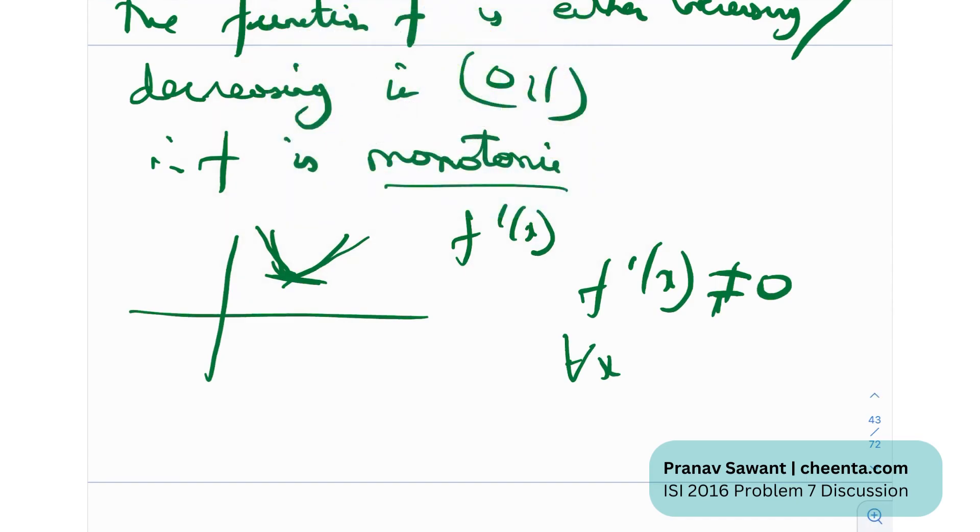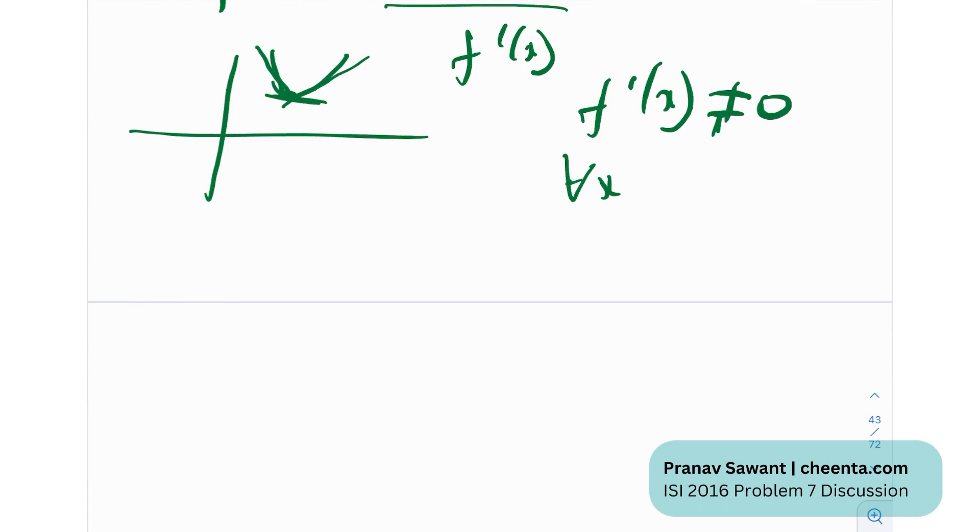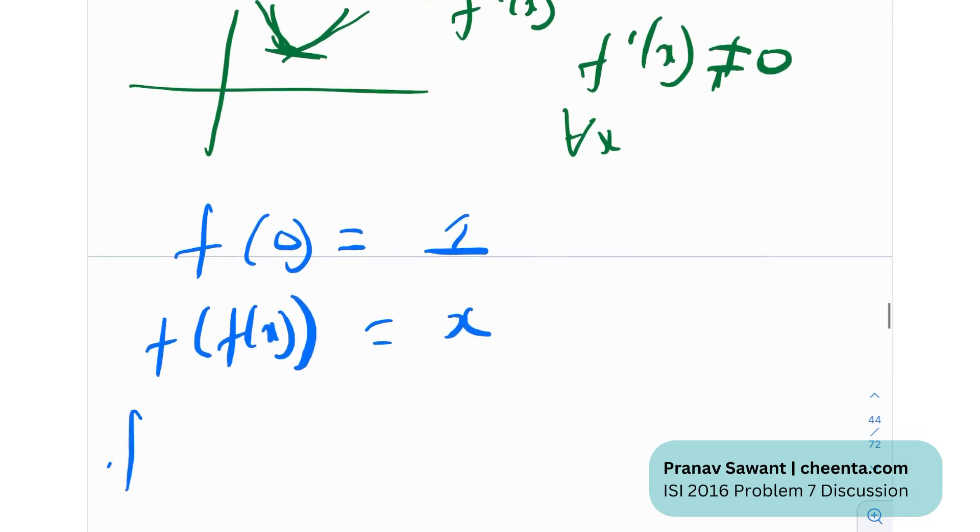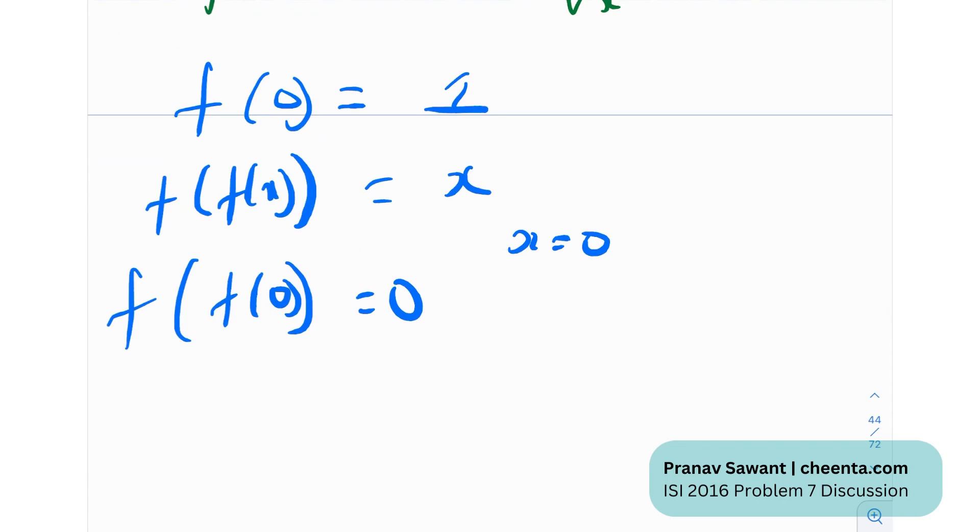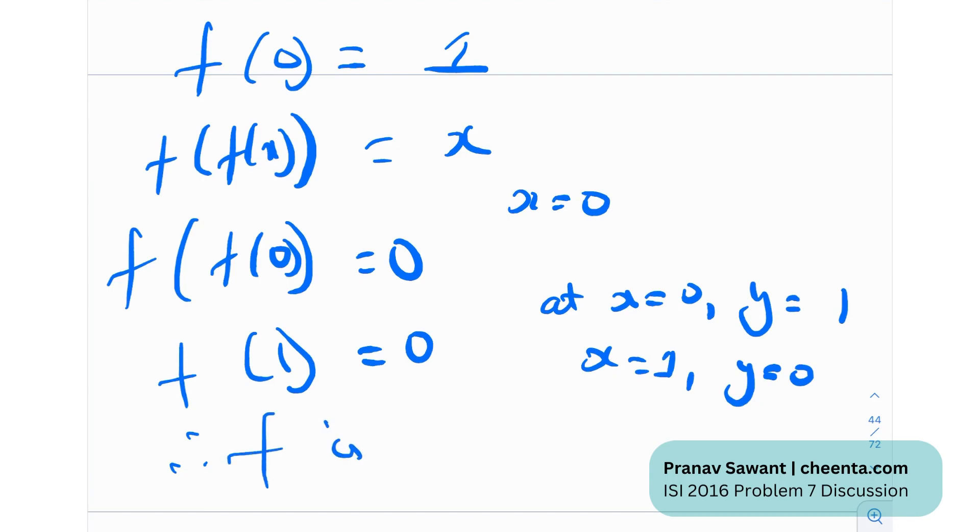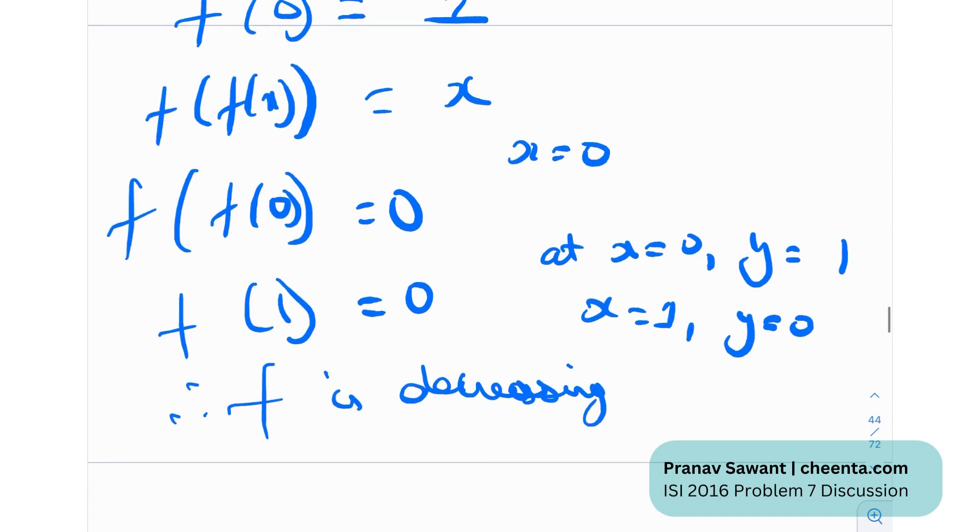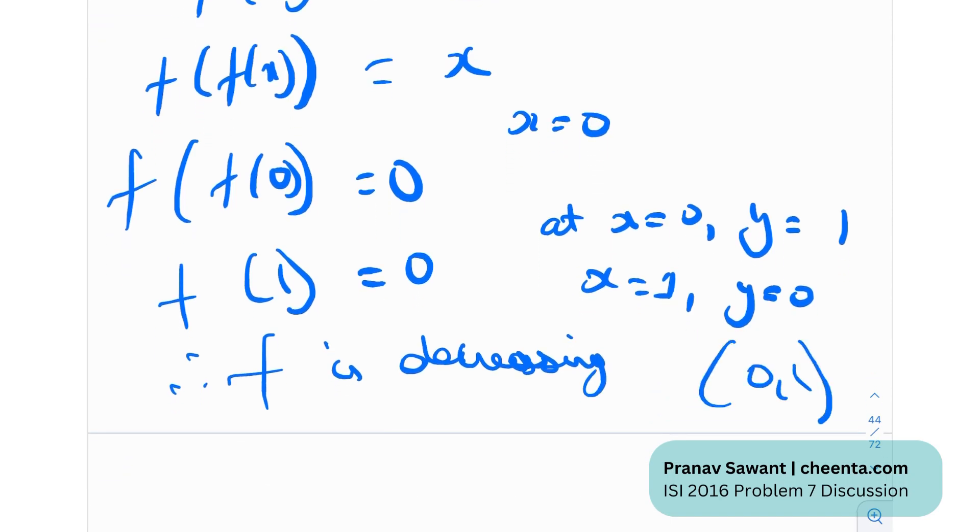It's given to us that f(0) = 1. This is given to us in the question. And they've also given us that f(f(x)) = x. I will just plug in x = 0 here. If I plug in x = 0, I'll get f(f(0)) = 0, and f(f(0)) = f(1). So I'll get f(1) = 0. So at x = 0, I'm getting y = 1, and at x = 1, I'm getting y = 0. Therefore, f is monotonically decreasing. f is a decreasing function - we essentially saw that it's monotonic and it is decreasing.